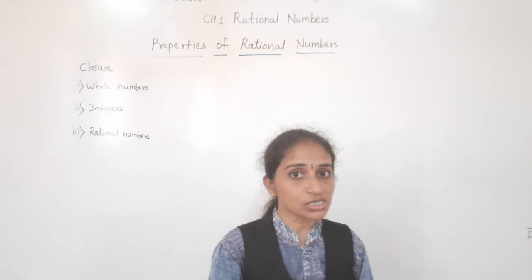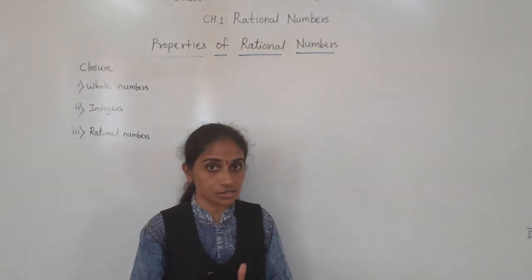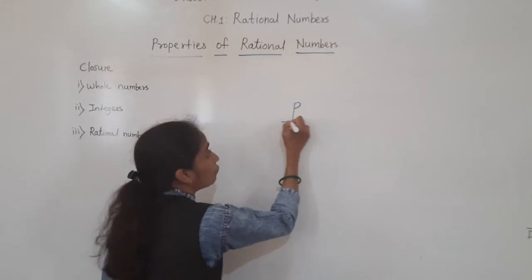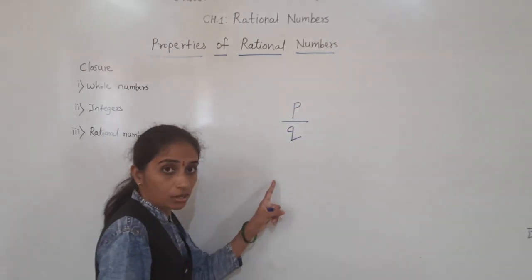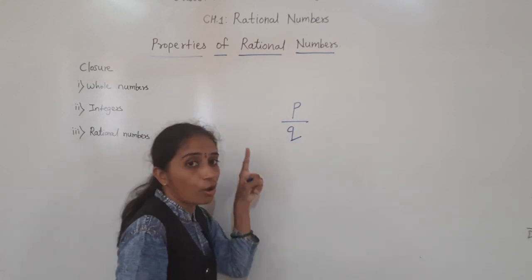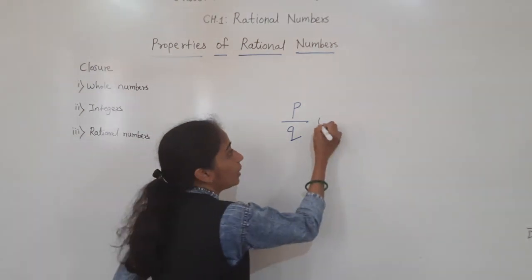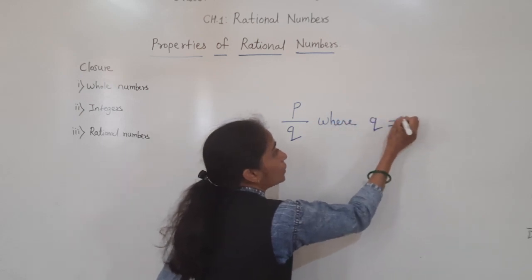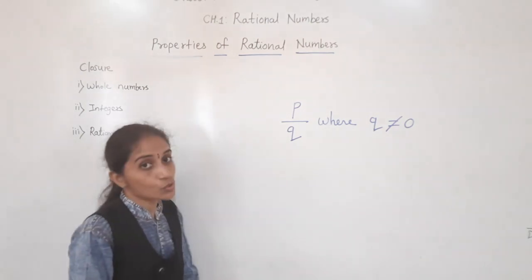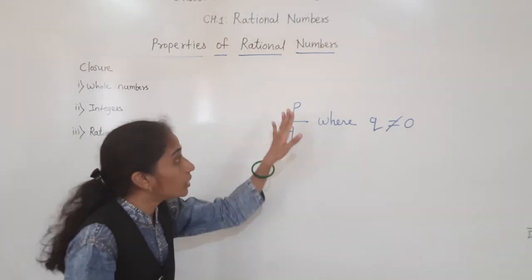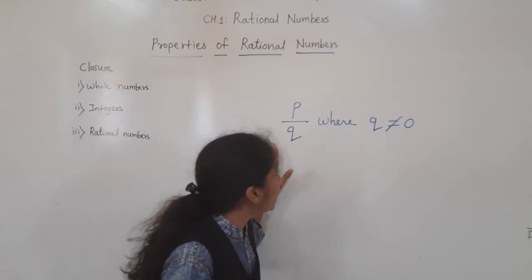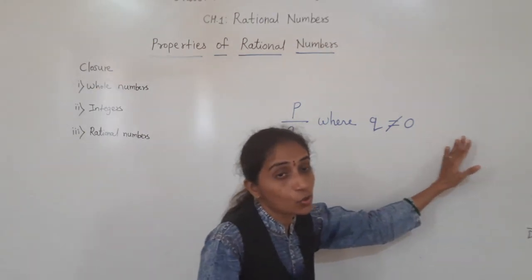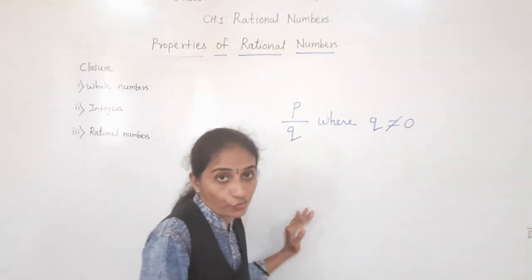What is meant by rational numbers? You have already learnt this concept in previous years. Rational numbers are the numbers which we write in the form of P upon Q, where Q is not equal to 0. We write them in the form of a fraction.